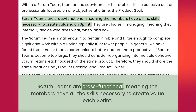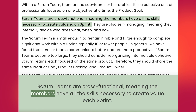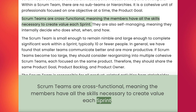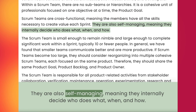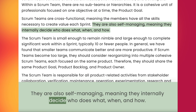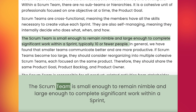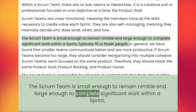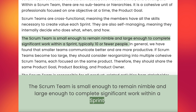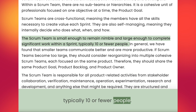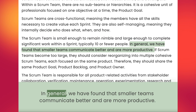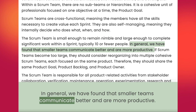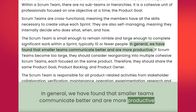Scrum teams are cross-functional, meaning the members have all the skills necessary to create value each sprint. They are also self-managing, meaning they internally decide who does what, when, and how. The Scrum team is small enough to remain nimble and large enough to complete significant work within a sprint, typically 10 or fewer people. In general, we have found that smaller teams communicate better and are more productive.